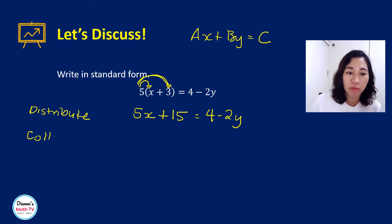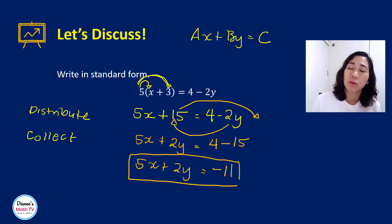And then what do we want to do? Collect all variables on one side. So I have 5x and then the minus 2y, I will put it here. So it will become plus 2y. And then for the 15 here, all constants on the other side. So 4 minus 15. Therefore, we have 5x plus 2y equals negative 11. So that's it.